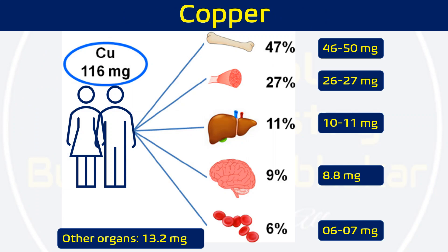Regarding copper distribution among different tissues, taking a reference value of approximately 116 mg of copper in the body: bone contains roughly 47%, equivalent to about 46–50 mg; muscle contains 27%, equivalent to roughly 26–27 mg; liver contains 11%, that is 10–11 mg; brain has 9%, roughly 8.8 mg; and red blood cells have 6%, roughly 6–7 mg of copper. Other body organs contain approximately 13.2 mg of copper.